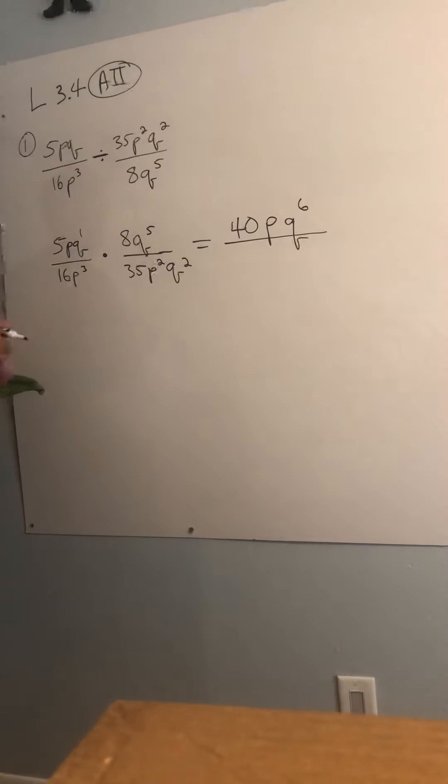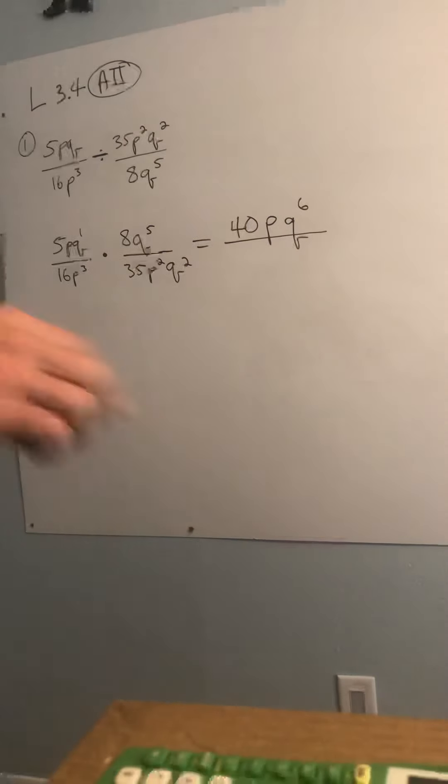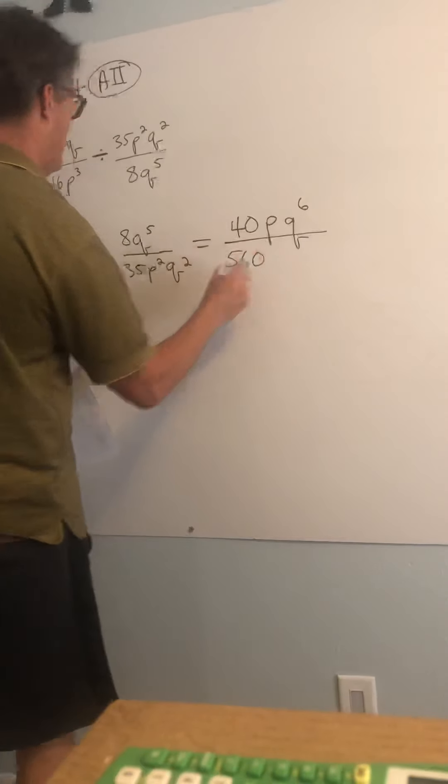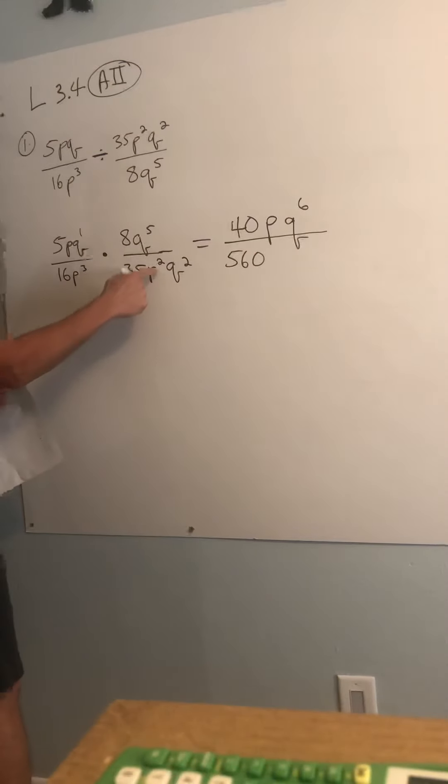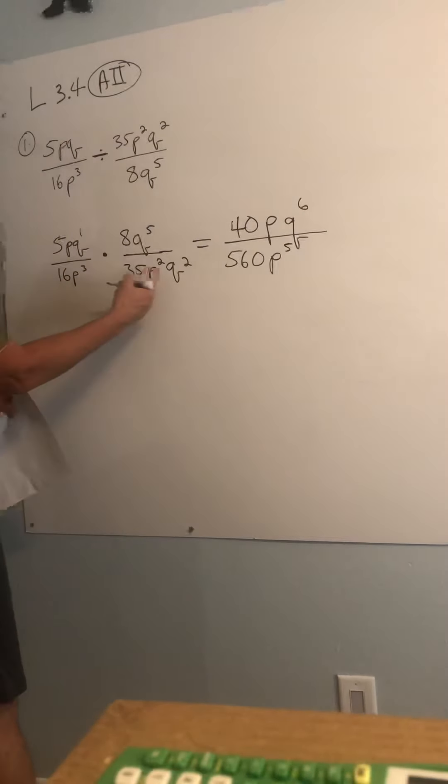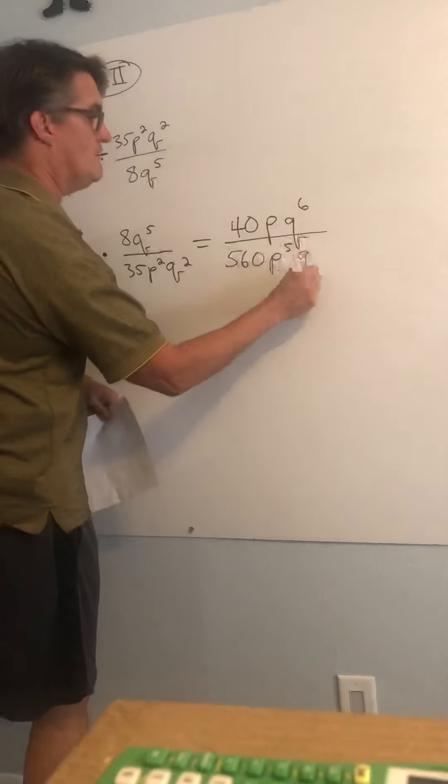16 times 35, we're going to use our trusty old calculator, you know, that's how I roll. So 16 times 35, 560. P to the third, P to the second will be P to the fifth, and then there's no Qs here, and then Q to the second, I'm going to write it over here.